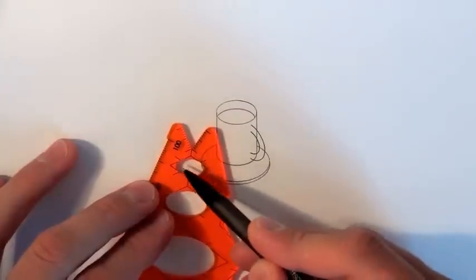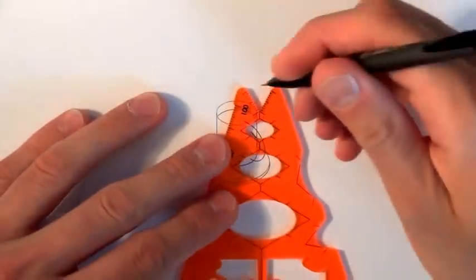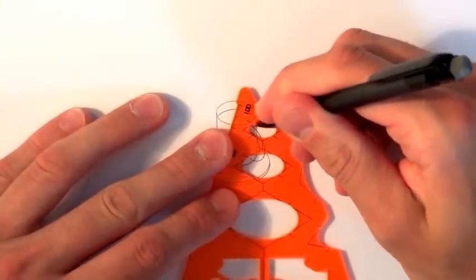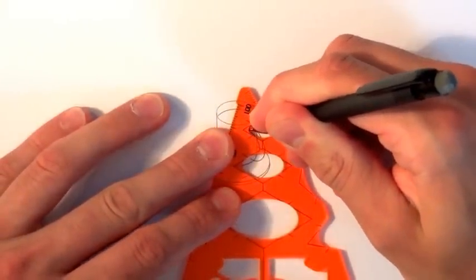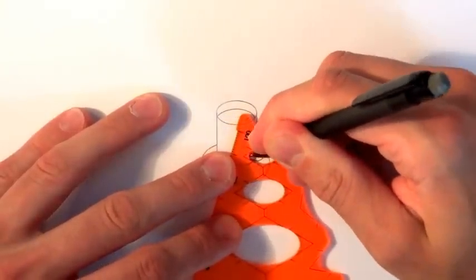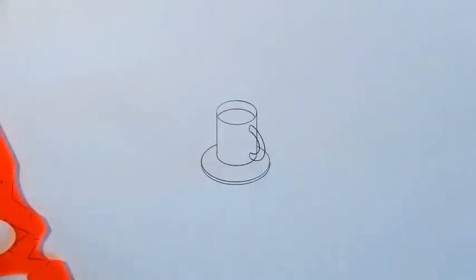Now this last bit we're just going to use the corner edge of the smaller ellipse tool just to give a little rounded effect on our handle, like so, nice and delicate.